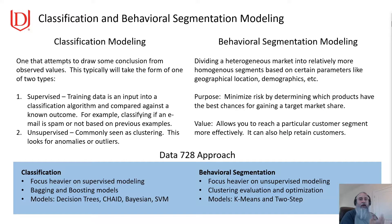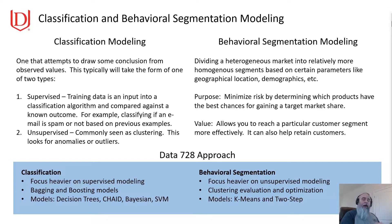The two sides of this are classification and behavioral segmentation modeling. Using the textbook definition, classification is about trying to draw some conclusions based on observed values — it's trying to predict a value. It typically takes the form of either supervised or unsupervised. Supervised uses training data as input to a classification algorithm that's compared against a known outcome — for example, classifying email as spam or not spam based off of previous examples. Unsupervised is more commonly called clustering. There are other unsupervised techniques, but clustering is the one we'll use in this course. This looks for anomalies or outliers as part of it.